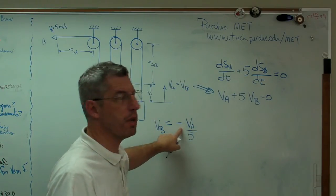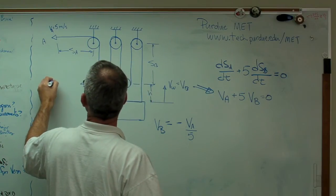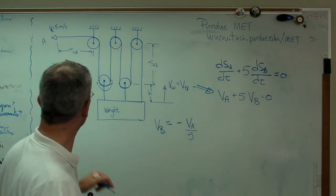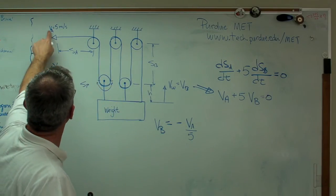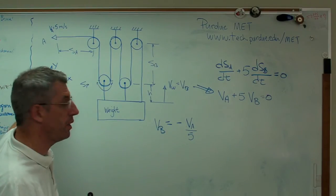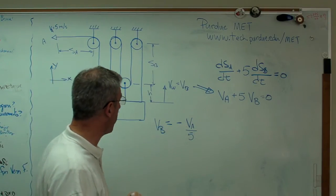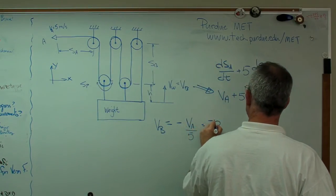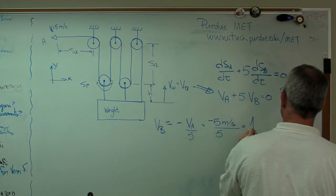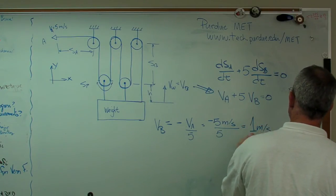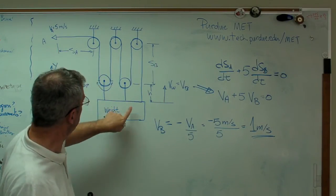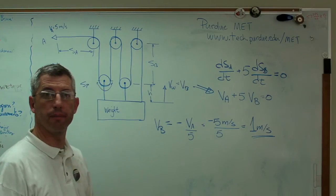That minus sign might be a little bit of a head scratcher. Let's look at our assumed coordinate system. If A is moving that way, the velocity of A is minus 5. Putting in minus 5 for VA gives us positive 1 meter per second. Since positive Y goes up, that's 1 meter per second upward. There's the answer.